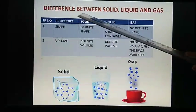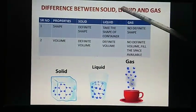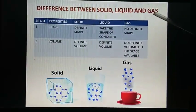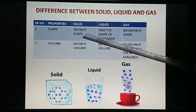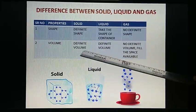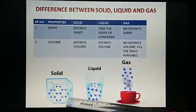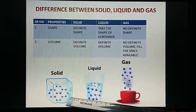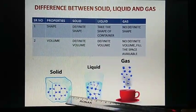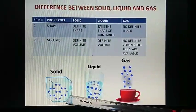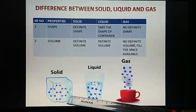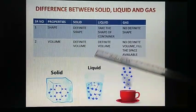Difference between solid, liquid and gas. Solids have a definite shape and definite volume. You can see a solid example shown here — that is ice. Ice is going to have a definite shape and a definite volume.